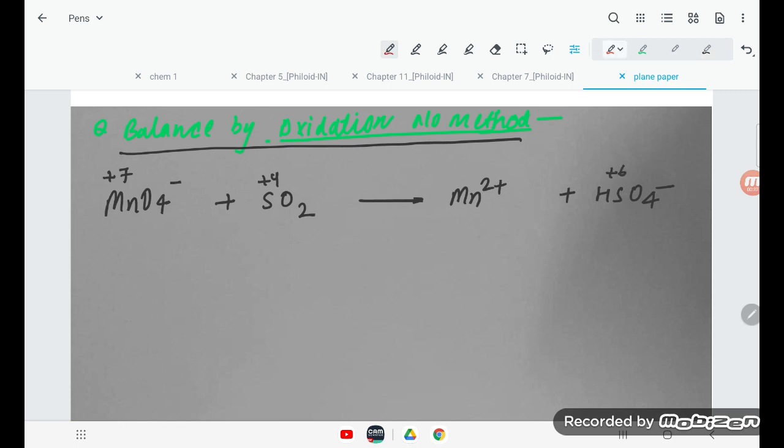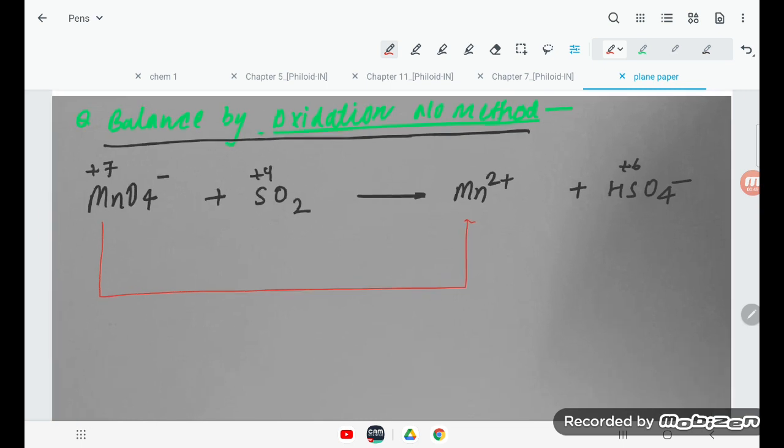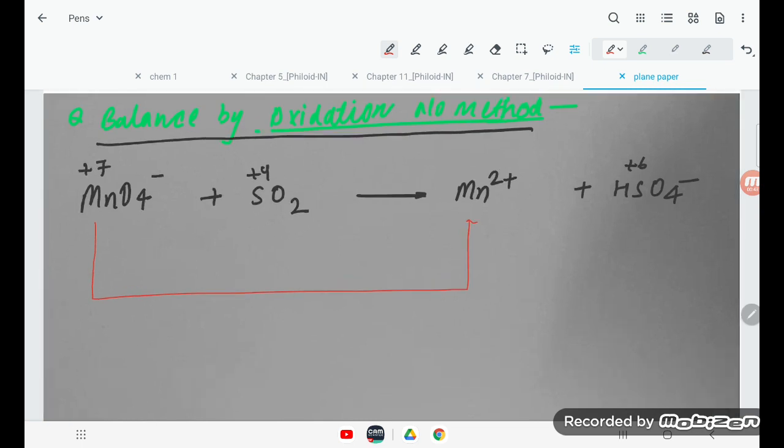Here you see, when the positive charge is decreasing, it means electrons are added. So here is addition of how many electrons? +7 to +2, that's addition of 5 electrons per atom of manganese.